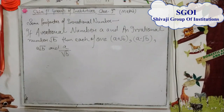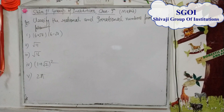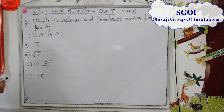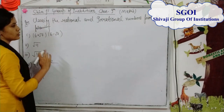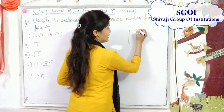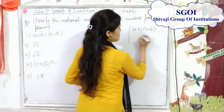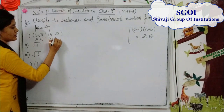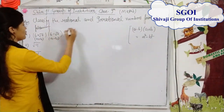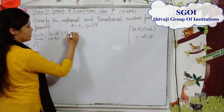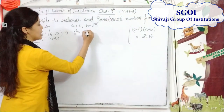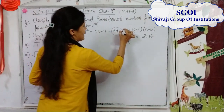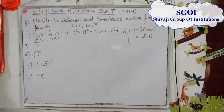Now let's classify the following as rational or irrational numbers. First question: (6 plus root 7)(6 minus root 7). Using the identity (A plus B)(A minus B) equals A squared minus B squared, where A is 6 and B is root 7, we get 6 squared minus root 7 squared, which is 36 minus 7, which equals 29 — a rational number. Second: root 11 is a non-perfect square root, and non-perfect square roots are irrational numbers, so root 11 is irrational.